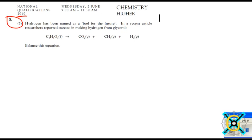The first thing, once you've got the question in front of you, is to read it and make sure you understand what they're asking. Hydrogen has been named as a fuel of the future. In a recent article, researchers have reported success in making hydrogen from glycerol. And it shows the equation unbalanced and asks you to balance this equation.